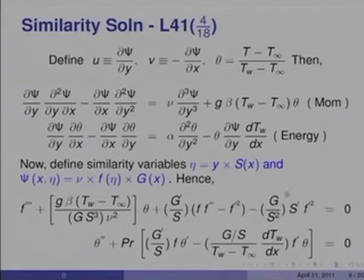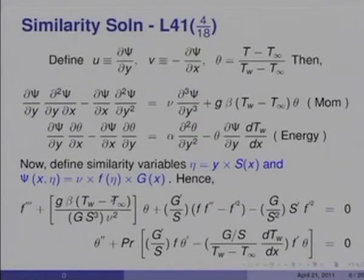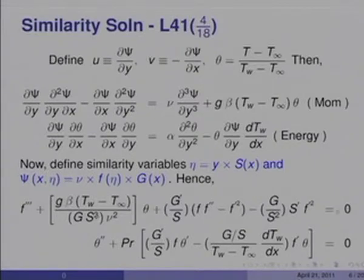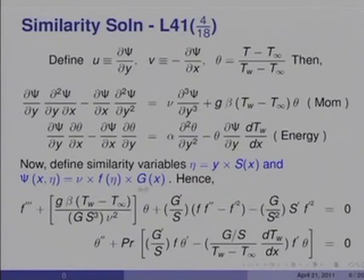These equations can be solved by similarity method if all the grouped factors are absolute constants. Here g is a function of x, s is also a function of x, and T_w − T_∞ can also be a function of x, but the groups as a whole must be constants. Specifically, gβ(T_w − T_∞)·g·s³/ν², g'/s, g·s'/s², and g/s·(T_w − T_∞)·dT_w/dx must all be absolute constants. Only when all these factors are constant do we get two perfect ordinary differential equations, which is the requirement for similarity solutions.